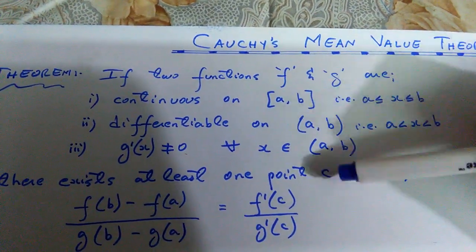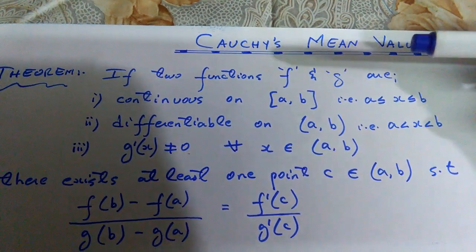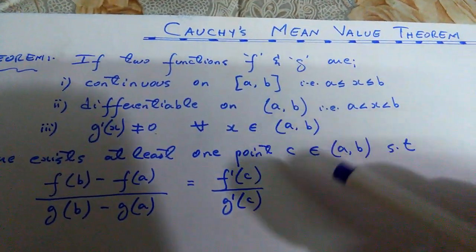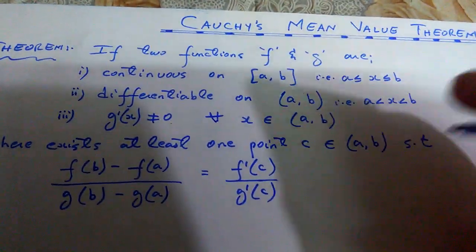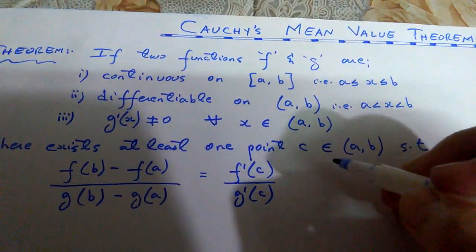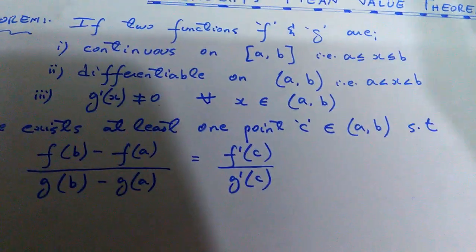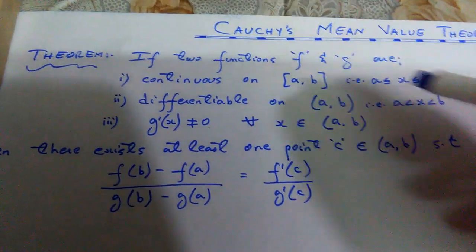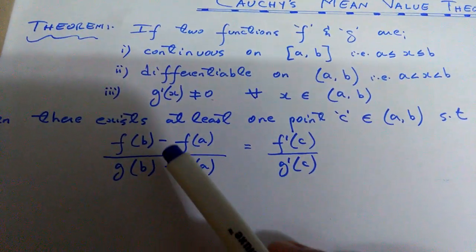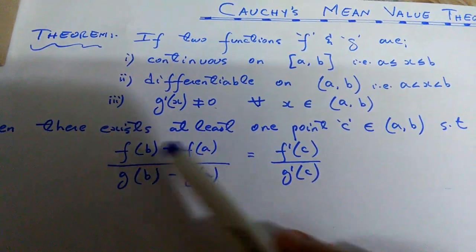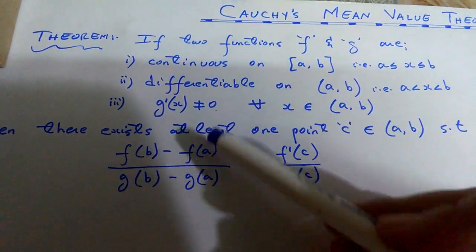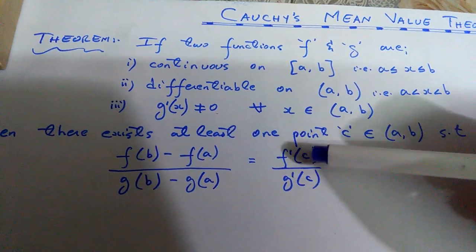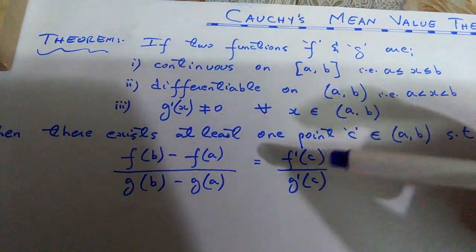If these three conditions are satisfied, then there is going to exist at least one point c belonging to the open interval (a, b), such that the ratio of the vertical differences of the two functions should be equal to the ratio of the slopes of these two functions at the point c.